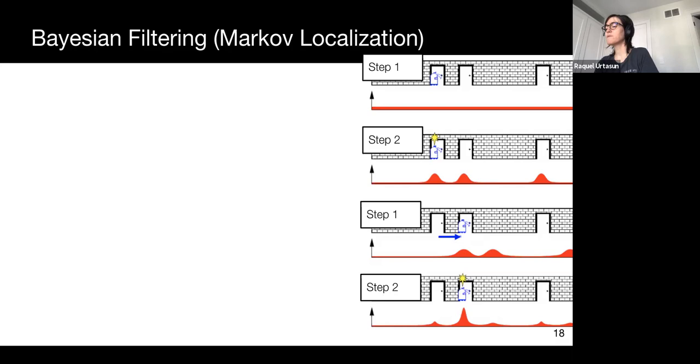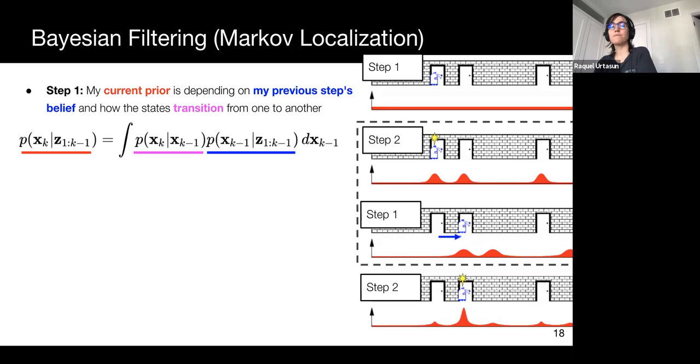Each iteration begins with a prediction step. This step uses a propagation model to compute a prior belief over the current state based on the previous state posterior. For localization, this propagation model can be given by a kinematic model, for instance.